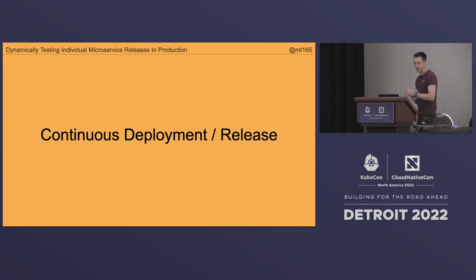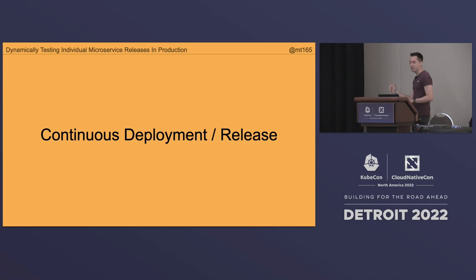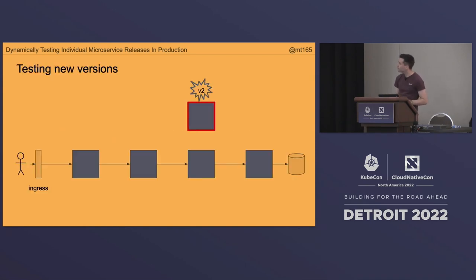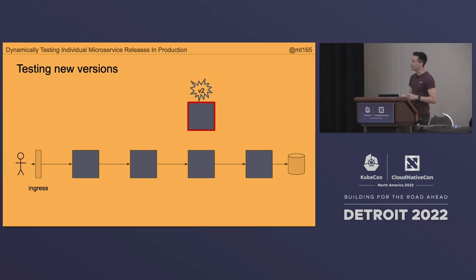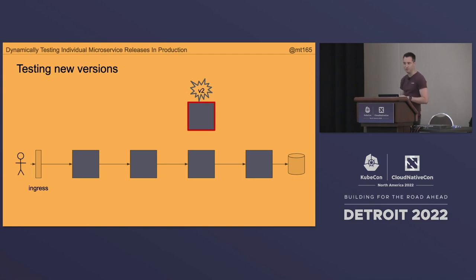Continuous deployment and continuous release — that's the problem we're actually trying to tackle. CI/CD has been a hot topic for maybe two decades. I'm going to look at the continuous deployment part. Say we've got our string of microservices and there's a putative new version — a candidate of one of them. I'll call these v1 and v2. You might have multiple candidate versions at a time — multiple people working on multiple branches. That's all valid.